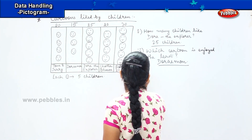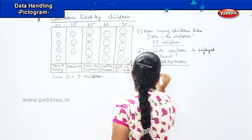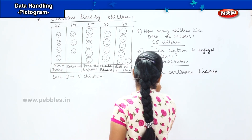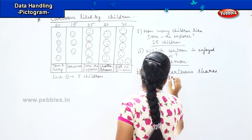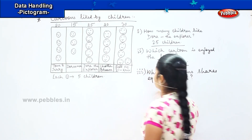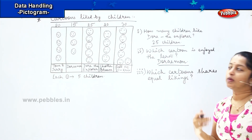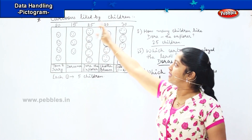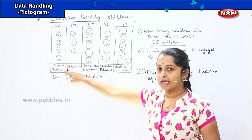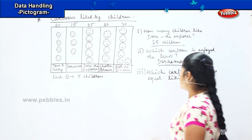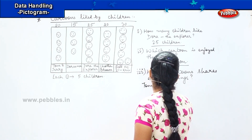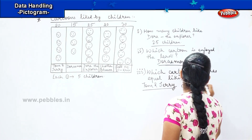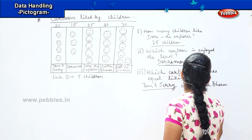Tell me the next question's answer: which cartoon shares equal liking? This means which cartoons are liked equally — is there any number repeated twice? Yes — twenty is repeated twice. Those cartoons are Tom and Jerry and Chhota Bheem. So my answer is Tom and Jerry and Chhota Bheem.